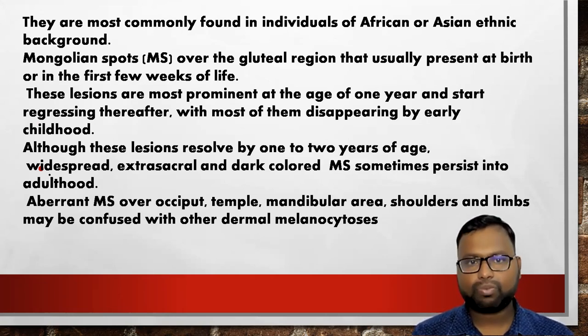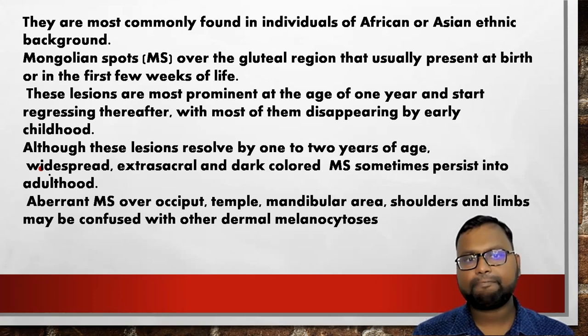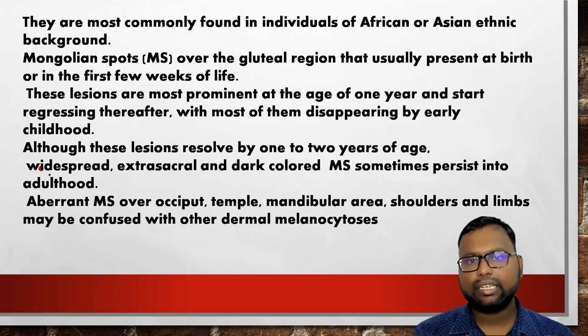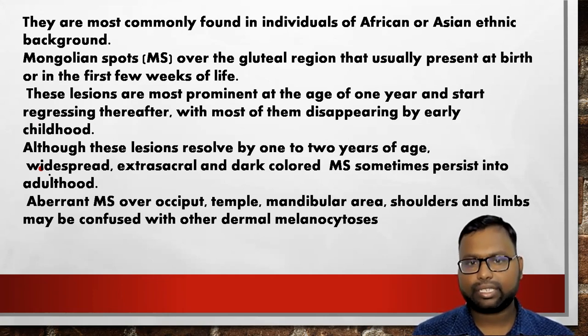Atypical Mongolian spots over the occiput, temple, mandibular area, shoulder, and limbs may be confused with other dermal melanocytosis, so you have to keep that in mind.